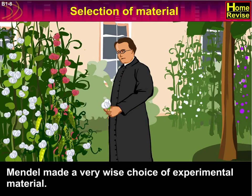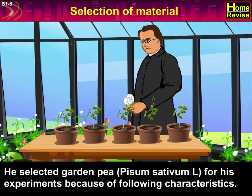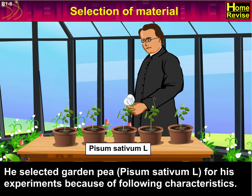Mendel made a very wise choice of experimental material. He selected Garden Pea, whose Latin name is Pisum sativum, for his experiments because of the following characteristics.